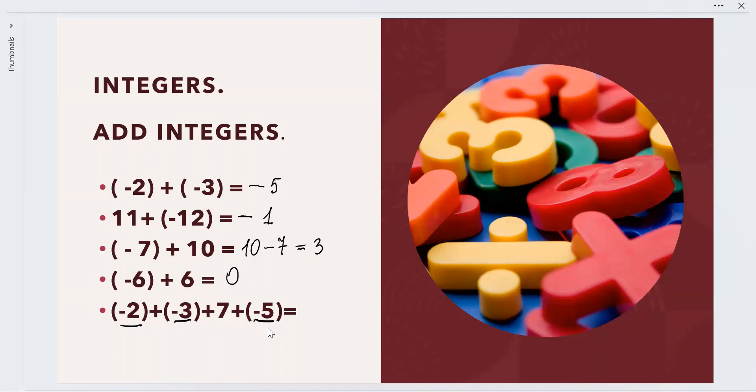We add the absolute values of the negative numbers: 2, 3, and 5. Together, 2 plus 3 is 5, plus 5 is 10. It's going to be -10, and the sum is negative.